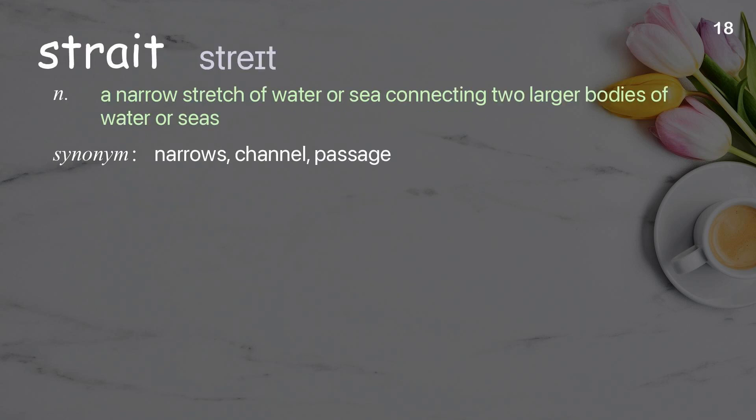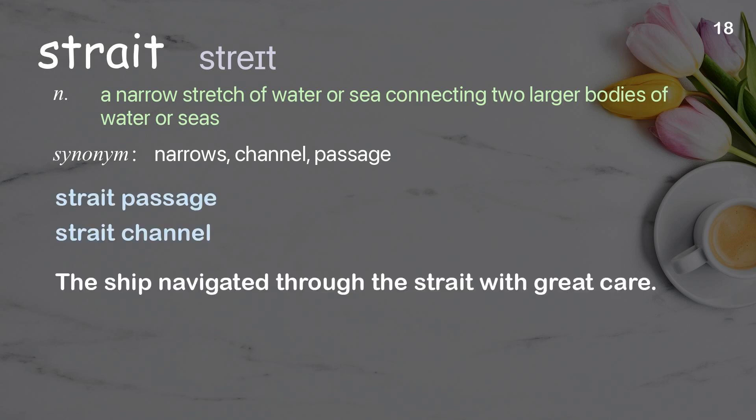Strait: A narrow stretch of water or sea connecting two larger bodies of water or seas. Examples: Strait passage. Strait channel. The ship navigated through the strait with great care.